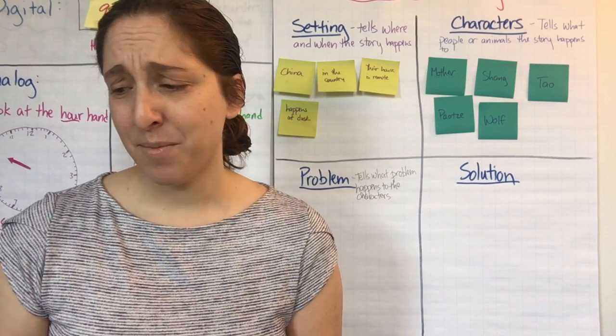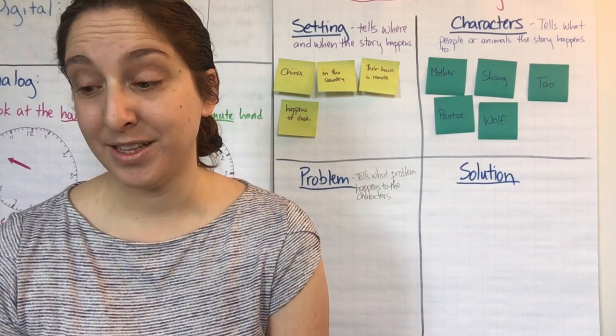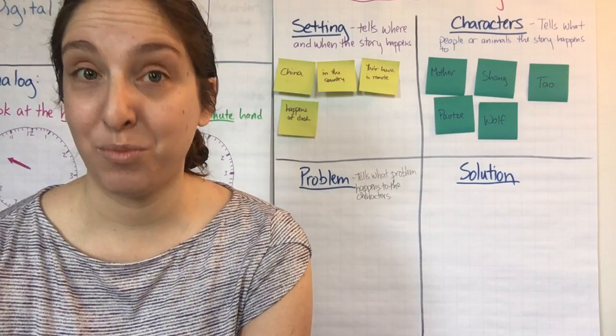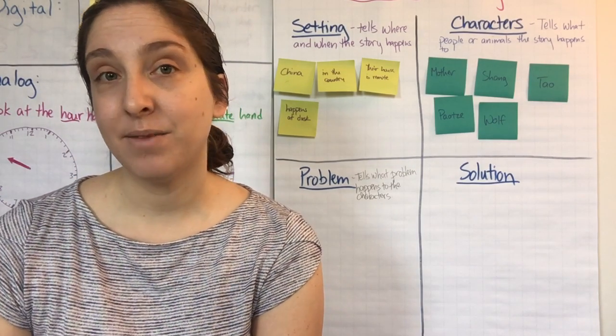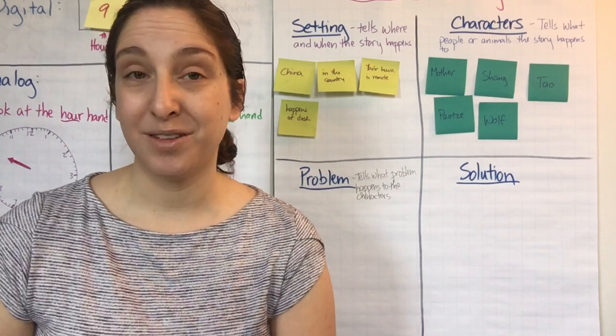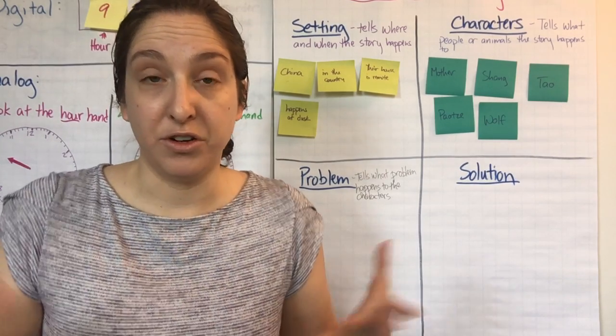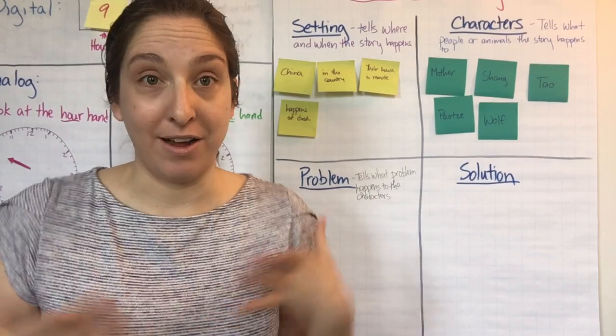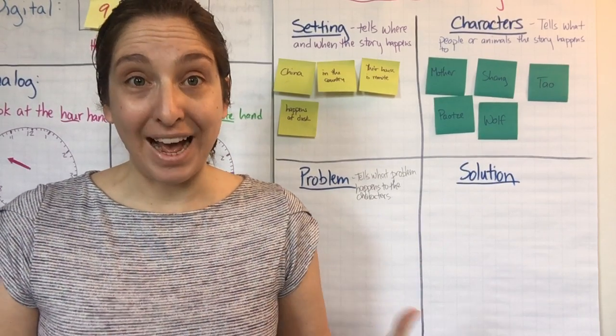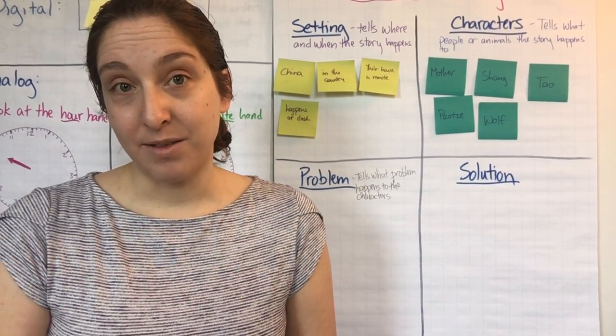So, thinking about what's happening in this book, what do you think the problem is? Well, the problem is something that happens to the main characters that makes it hard for them to do what they want to do, or to be alive, or to have fun. Something bad, basically, that happens to the main characters.